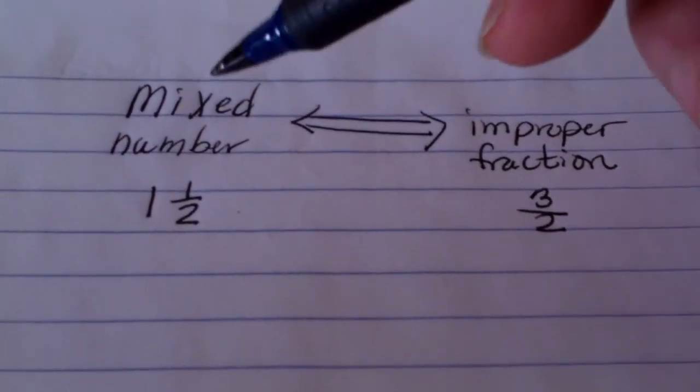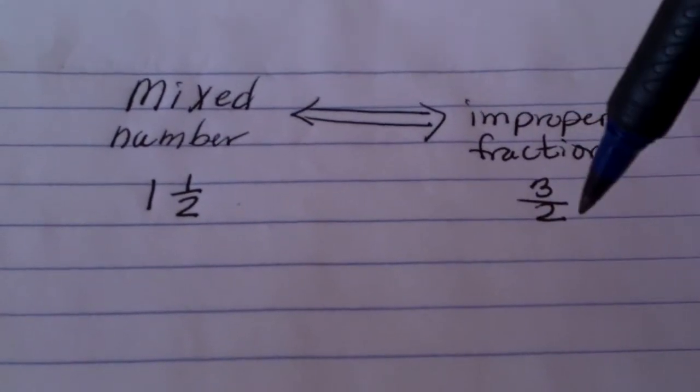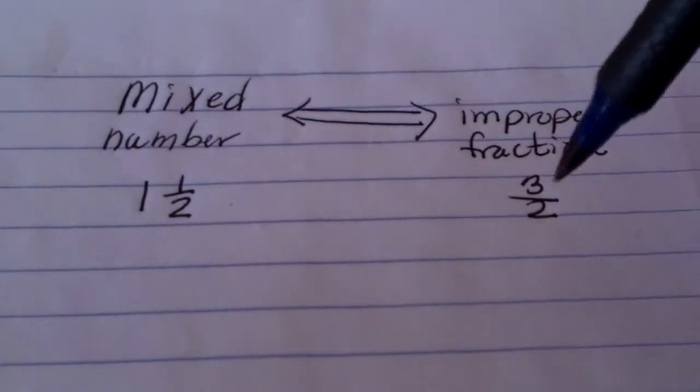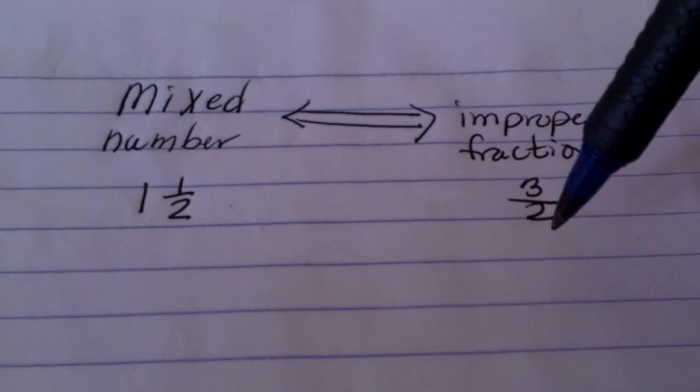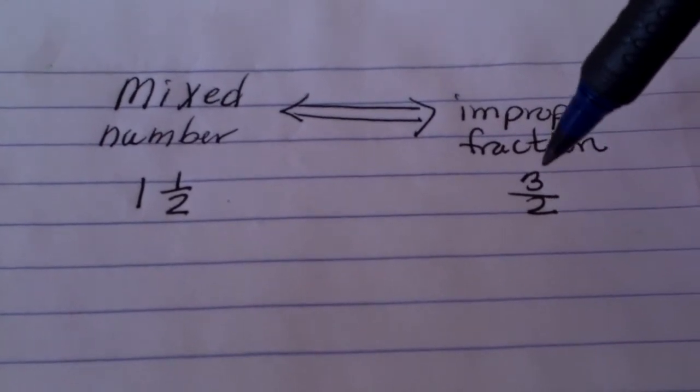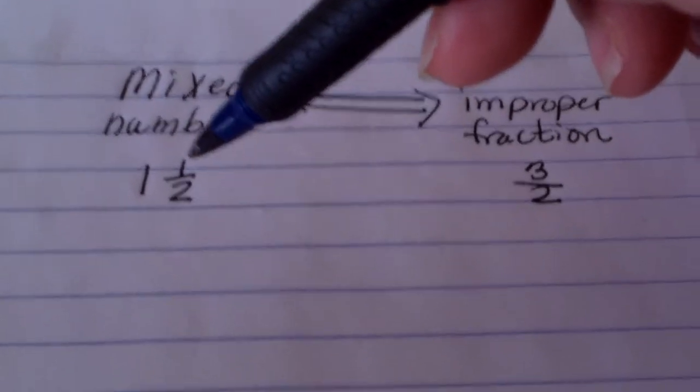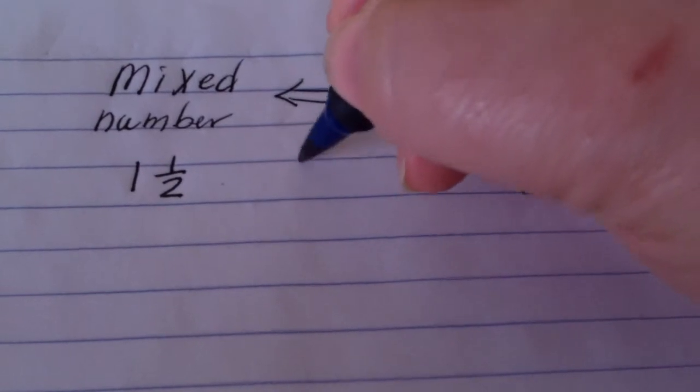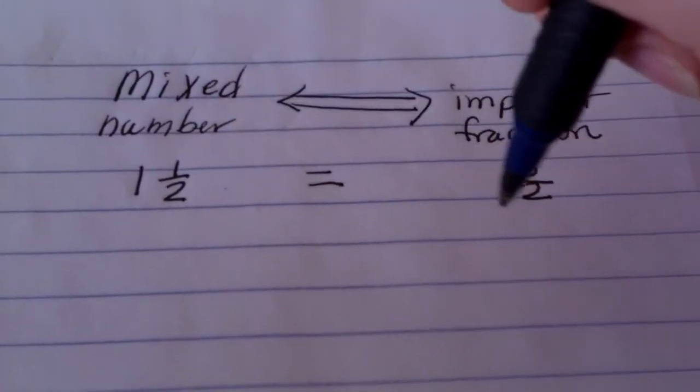Now we're going to talk about changing a number from a mixed number into an improper fraction and back again. Sometimes you like to have it written as an improper fraction with just a numerator and a denominator, three halves in this case. But sometimes it helps to have it in this form, one and one half. They're both equal, they both mean the same, but they definitely look different.